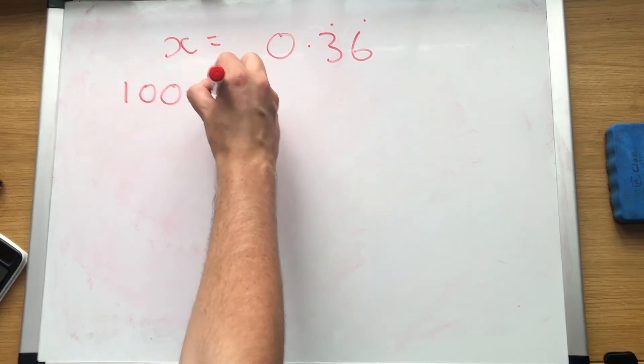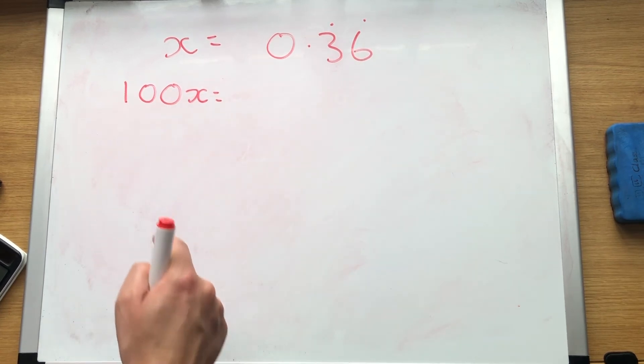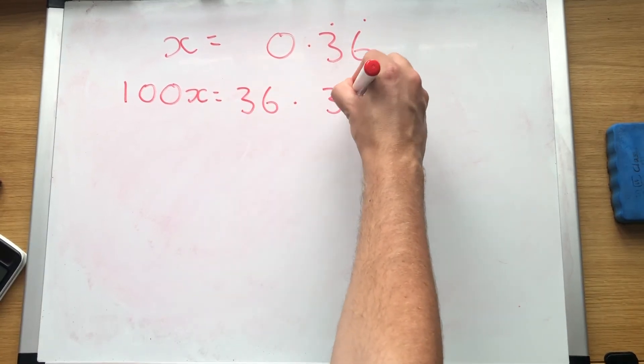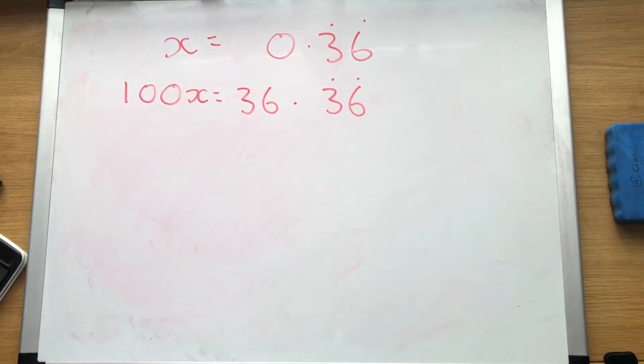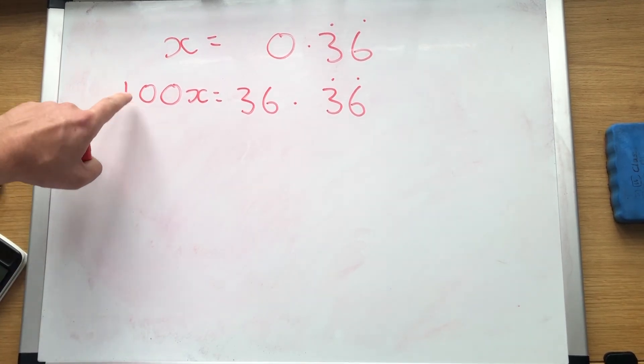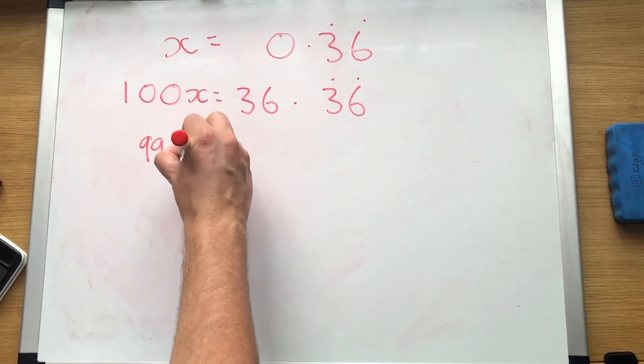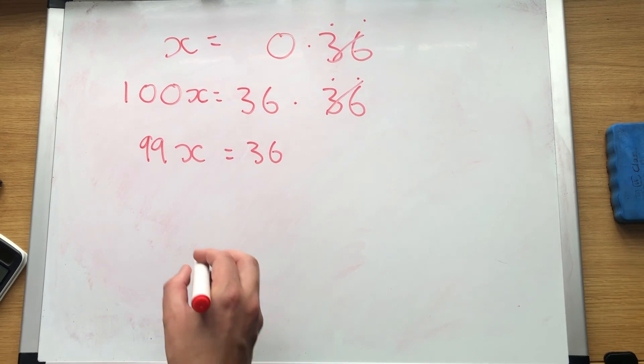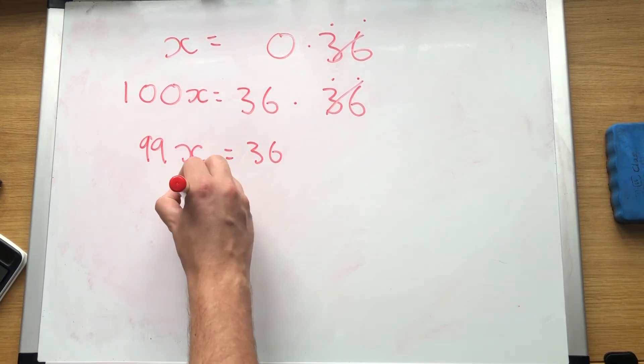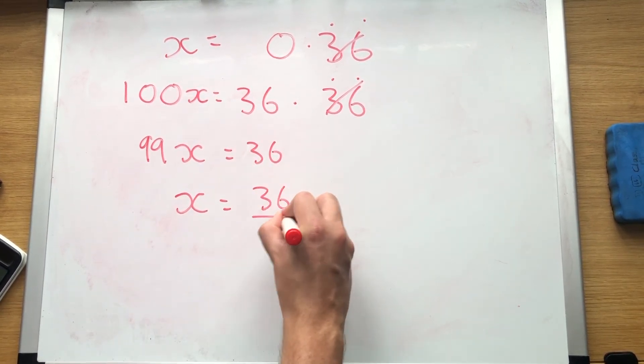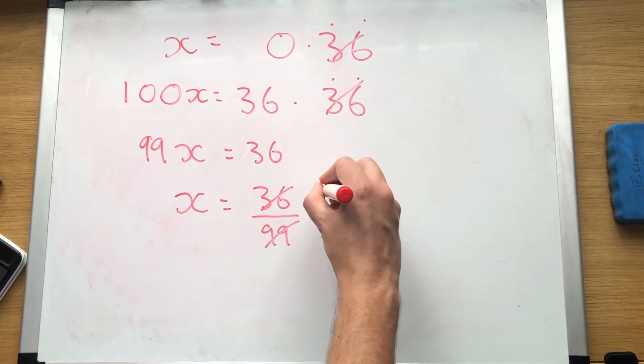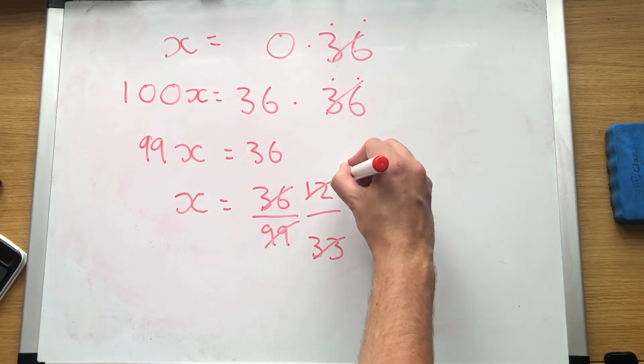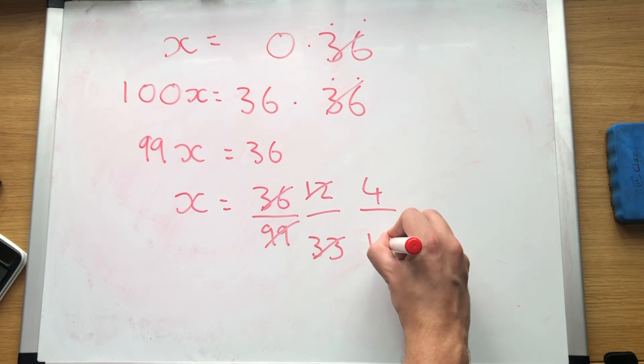There are 1, 2 numbers after the decimal point. So we have 1, 2 zeros. So it's going to be 100x. There are 1, 2 numbers and 1, 2 zeros. So we move everything 1, 2 to the left. 3, 6. 0.36 recurring. Now I think it's the best step in the whole of maths. 100x take away x: 99x. 36 take away 0: 36. And these two cancel out. Divide both sides by 99. 36 over 99. And we can simplify this to 12 over 33, and then we can simplify that again to make it 4 over 11.